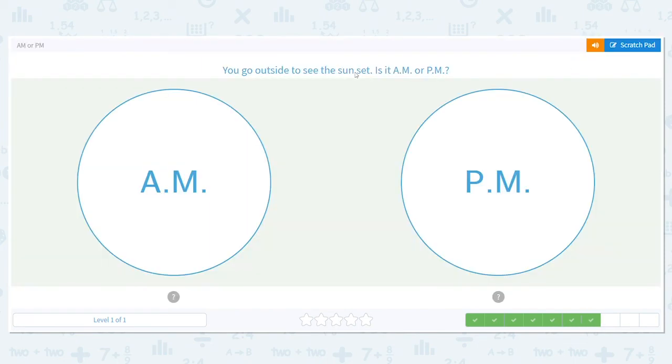You go outside to see the sunset. Is it A.M. or P.M.? Okay, we want to see the sunset, so that means the sun is going down. So that means is it getting to be day or night? It's getting to be nighttime, and nighttime is when we have P.M.